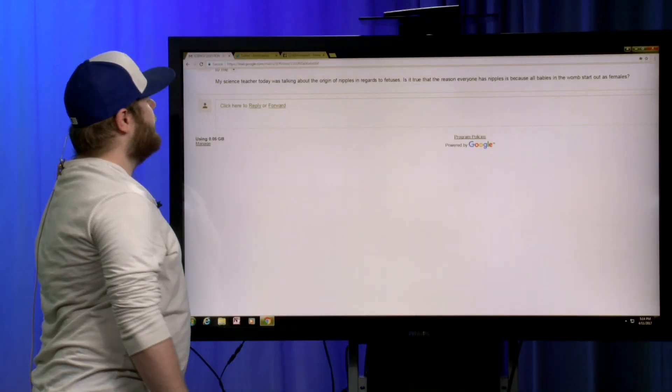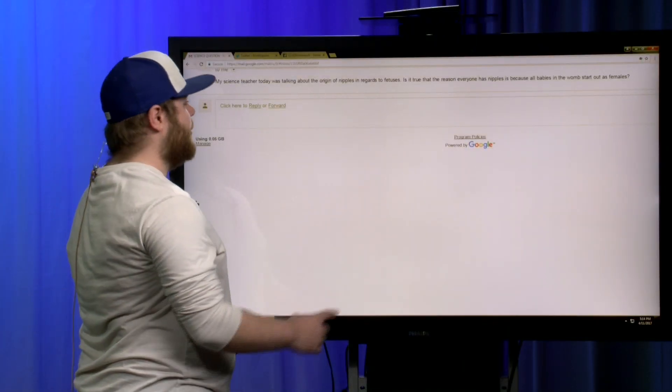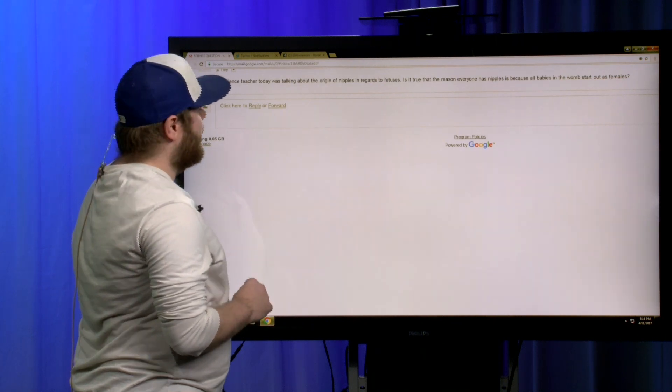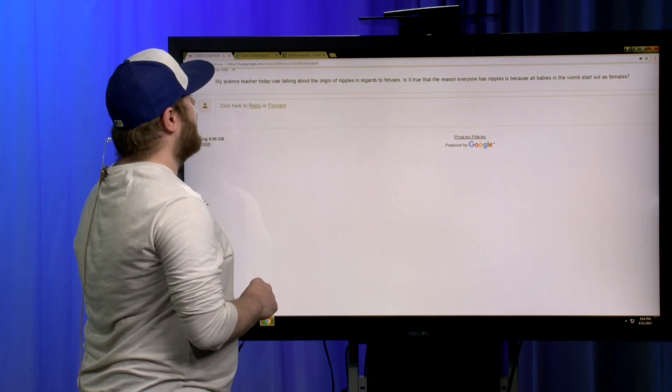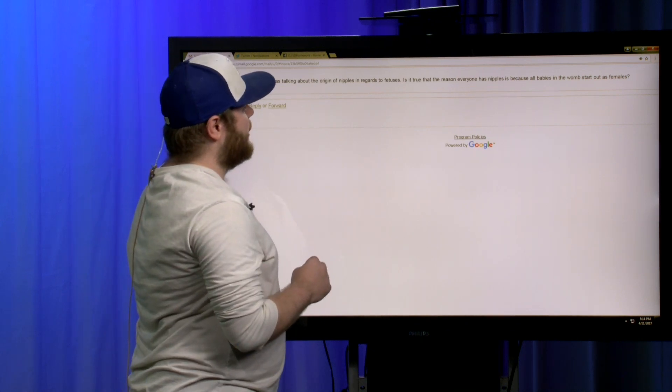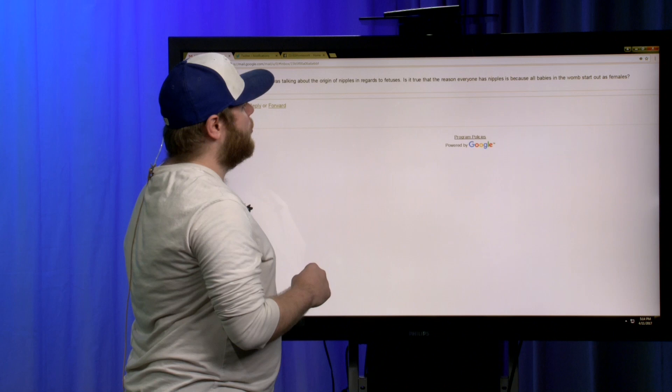A science question that's kind of funny, but it's a very good question. So it says, my science teacher today was talking about the origin of nipples in regards to fetuses. Is it true that the reason everyone has nipples is because all babies in the womb start out as a female?